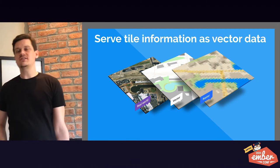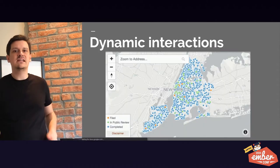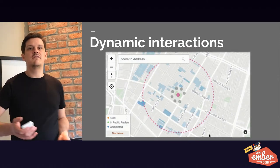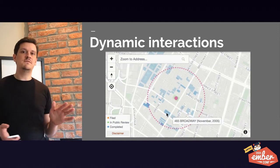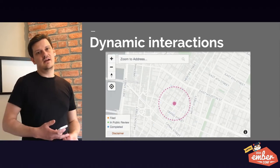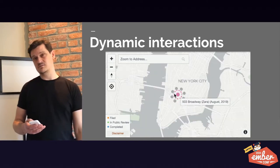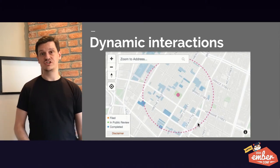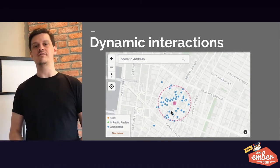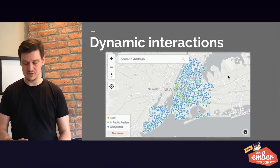As a solution to that, you can now serve tile information as vector data. That means we have dynamic interactions — we can change coloring, style, and zoom. In the GIF you're seeing here, we're actually switching between a point representation of data and a polygon representation of data. Using vector tiles, we're rendering this using something called Mapbox GL, which actually hooks into the graphics processing unit of a computer — so it's very fast rendering. This is actually what Google Maps web app uses now.